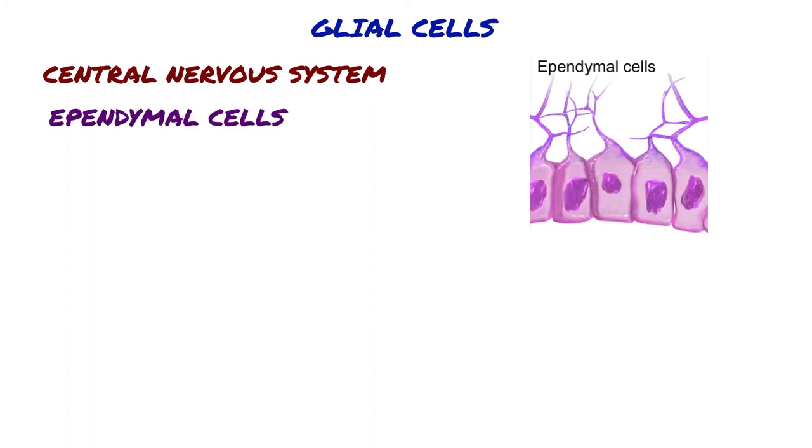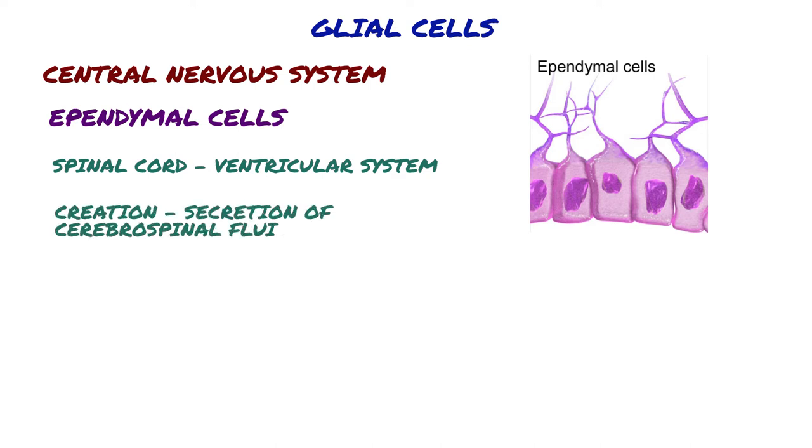Ependymal cells, also named ependymocytes, line the spinal cord and the ventricular system of the brain. These cells are involved in the creation and secretion of cerebrospinal fluid and beat their cilia to help circulate the CSF and make up the blood-CSF barrier. They are also thought to act as neural stem cells.